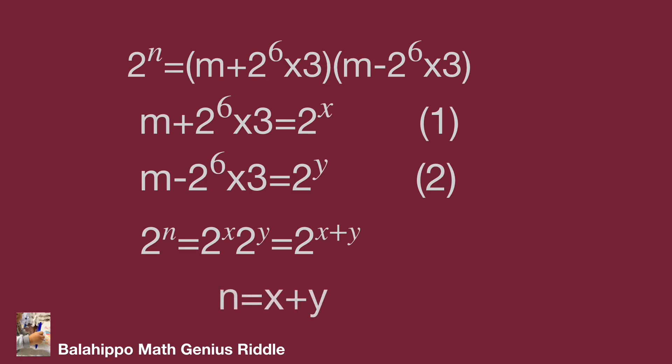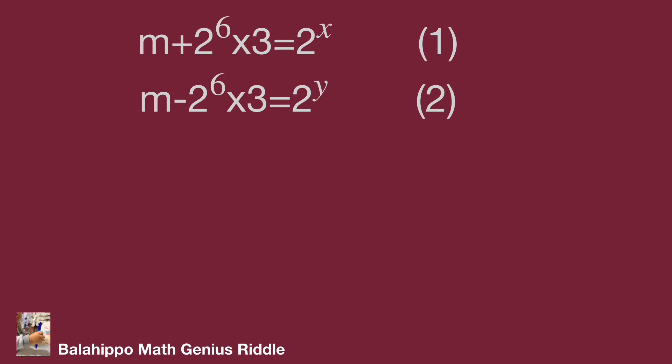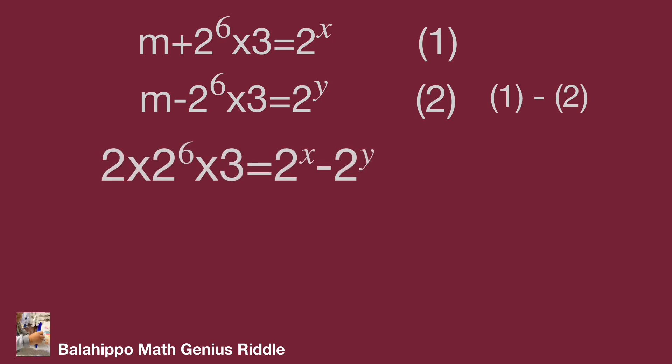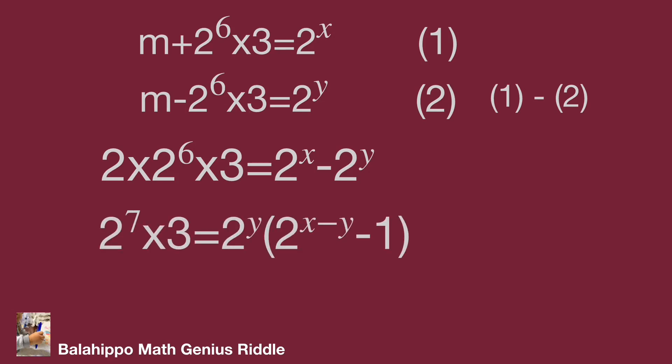So n equals x plus y. Next, subtract equation 2 from equation 1. It becomes 2 times 2 power of 6 times 3 equal to 2 power of x minus 2 power of y. Factor out 2 power of y on the right side and simplify. The equation becomes 2 power of 7 times 3 equal to 2 power of y times bracket 2 power of x minus y minus 1 bracket.